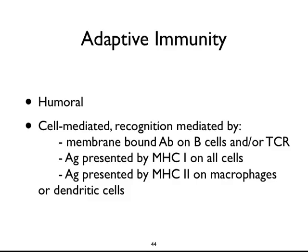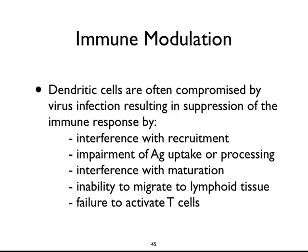Dendritic cells are scavenger cells and probably the primary component for activating the immune response — they are probably the gate that controls how the immune response is effected. Viruses have a number of ways of suppressing their activity: they can interfere with the recruitment of dendritic cells; they can impair antigen uptake or processing so dendritic cells are not free to present antigen; and they can interfere with the maturation of dendritic cells so they take up antigen but don't migrate to lymphoid tissue where they present antigen to naive T cells. If you don't get there, you fail to activate T cells.